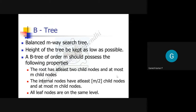That kind of tree is called a B-tree. A B-tree of order m should possess the following properties. The root node should have at least two child nodes and at most m child nodes. Internal nodes should have at least ⌈m/2⌉ child nodes and at most m child nodes — at most means maximum, at least means minimum.